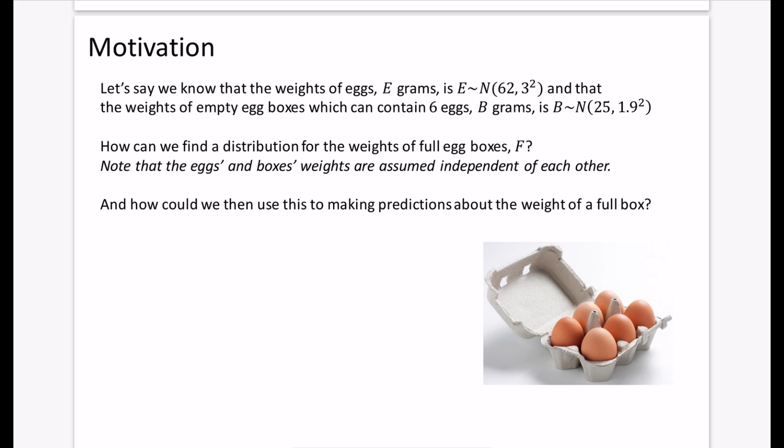And we know that the weights of the empty egg boxes, this kind of cartony thing that we have here, which can contain 6 eggs, is b grams. I've used the letter b for box and e for the eggs. And the average weight of a box is 25 grams. It has a lower standard deviation. Maybe it's because the machine is able to create more consistent weights of boxes, whereas chickens will have a bit more variation in the sizes of eggs. And it's got an average weight of 25 grams.